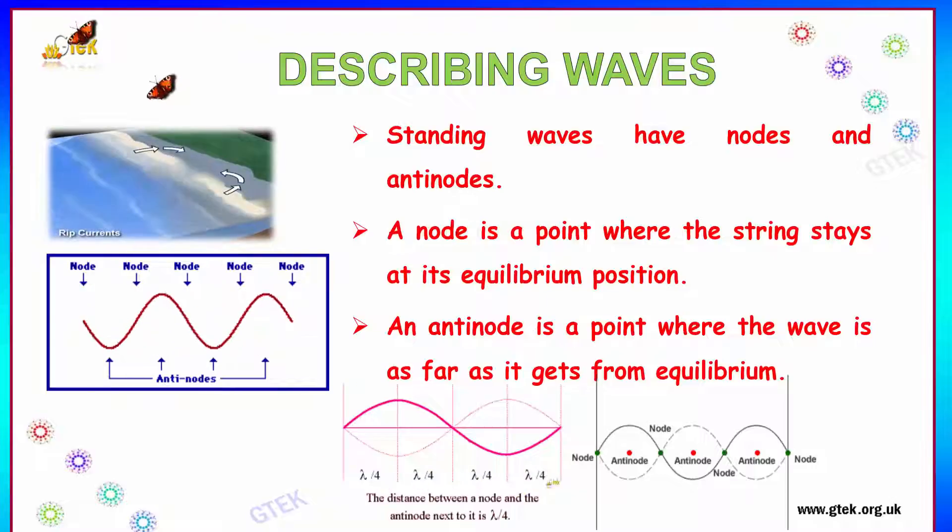If you see over here, the green color point is mentioning about the node, whereas the red point is emphasizing about the antinode. The distance between a node and an antinode next to it is lambda divided by 4.